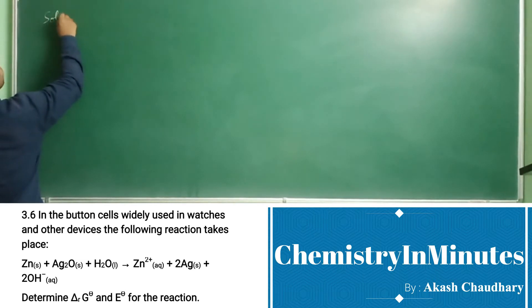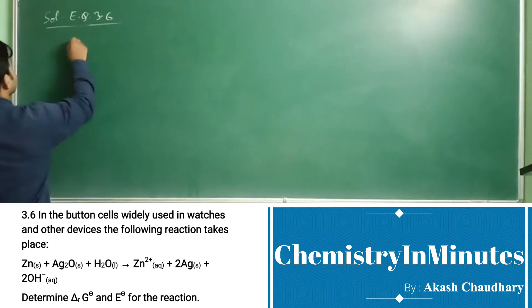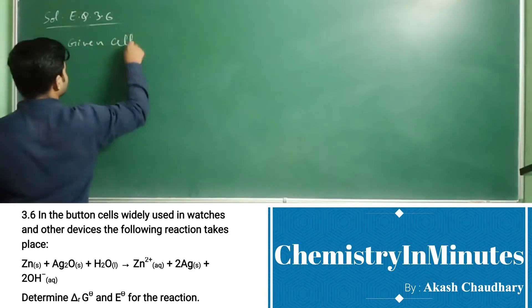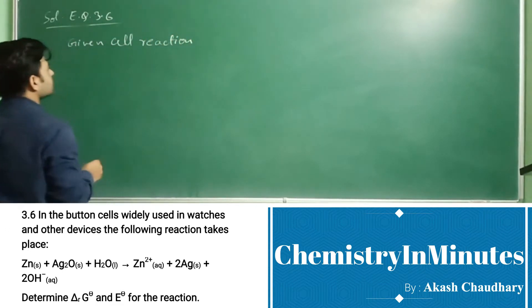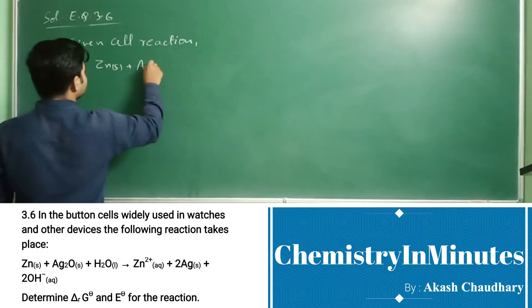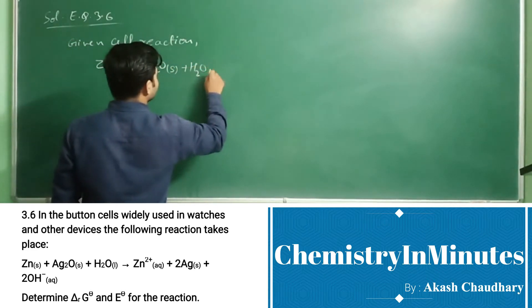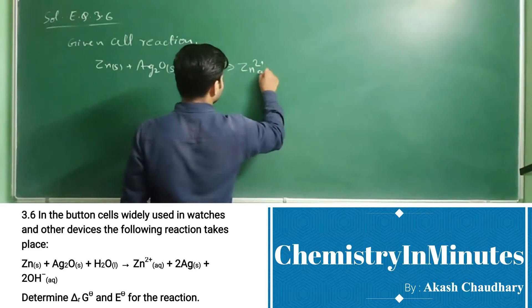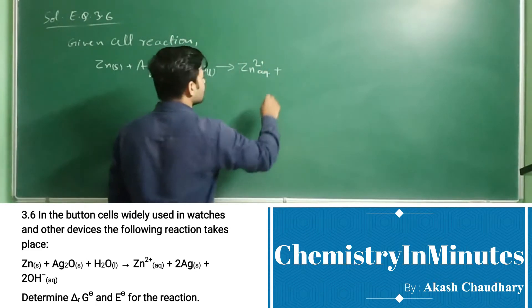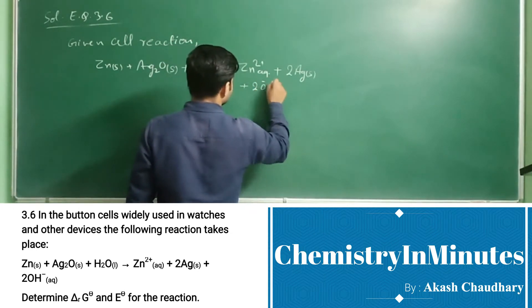Solution. Exercise question 3.6. Given cell reaction is Zinc solid plus Ag2O solid plus H2O liquid gives Zn2+ aqueous plus 2 Ag solid plus 2 OH minus aqueous.